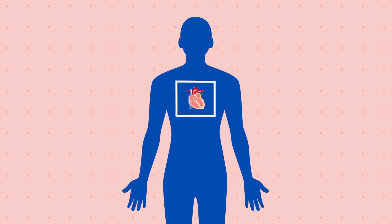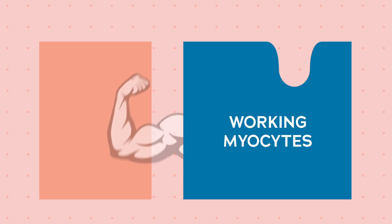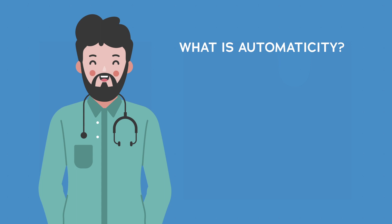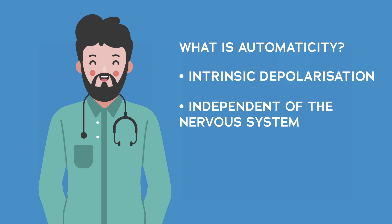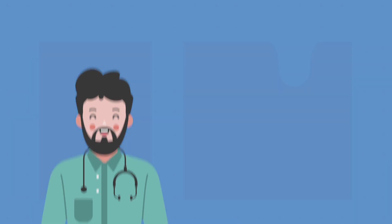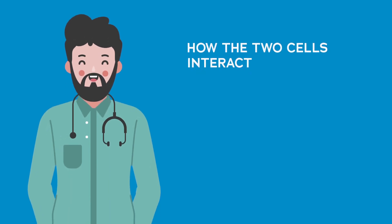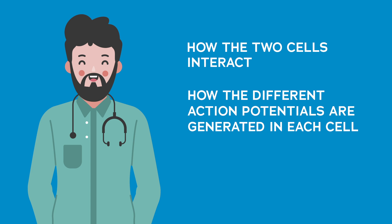The myocardium is composed of two major types of cardiac cells that perform two different functions. The first type are the working myocytes, which are responsible for forcefully contracting to pump blood. The second type are the nodal cells, which have the unique feature of automaticity. These two cell types are extremely interconnected — when the nodal cells depolarize, the working myocytes contract instantaneously. This video covers how these two cells interact and how their different action potentials are generated.